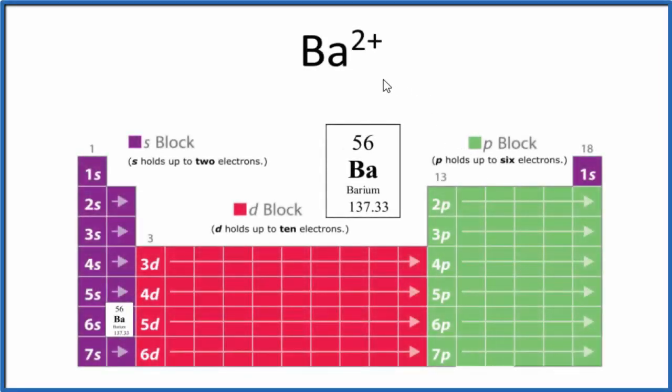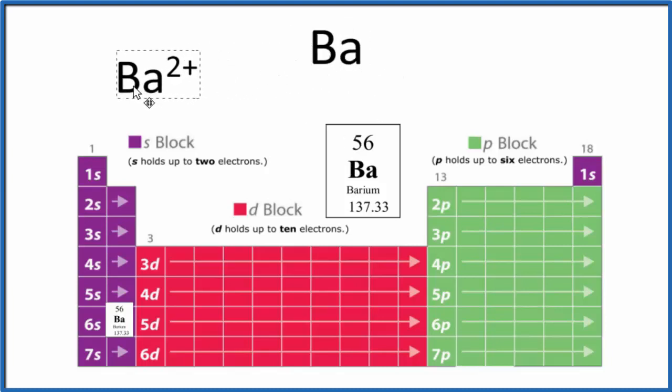In this video, we'll write the electron configuration for Ba2+, the barium ion. Before we do that, though, let's just do the electron configuration for neutral barium. We know it's neutral—there's no negative or positive sign after. So it's neutral, just like it's found on the periodic table.